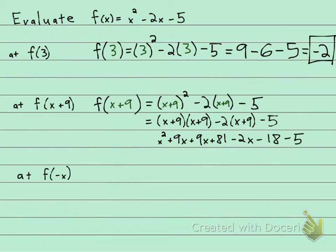Drop down to minus 5, and let's just put together anything we can here, any like terms I see. I have x's, x's, and x's that will go together, and also I see that I have numbers, numbers, and numbers, some constants that will go together. So my answer is going to be x squared plus 9x plus 9x minus 2x plus 16x, plus 81 minus 18 minus 5.